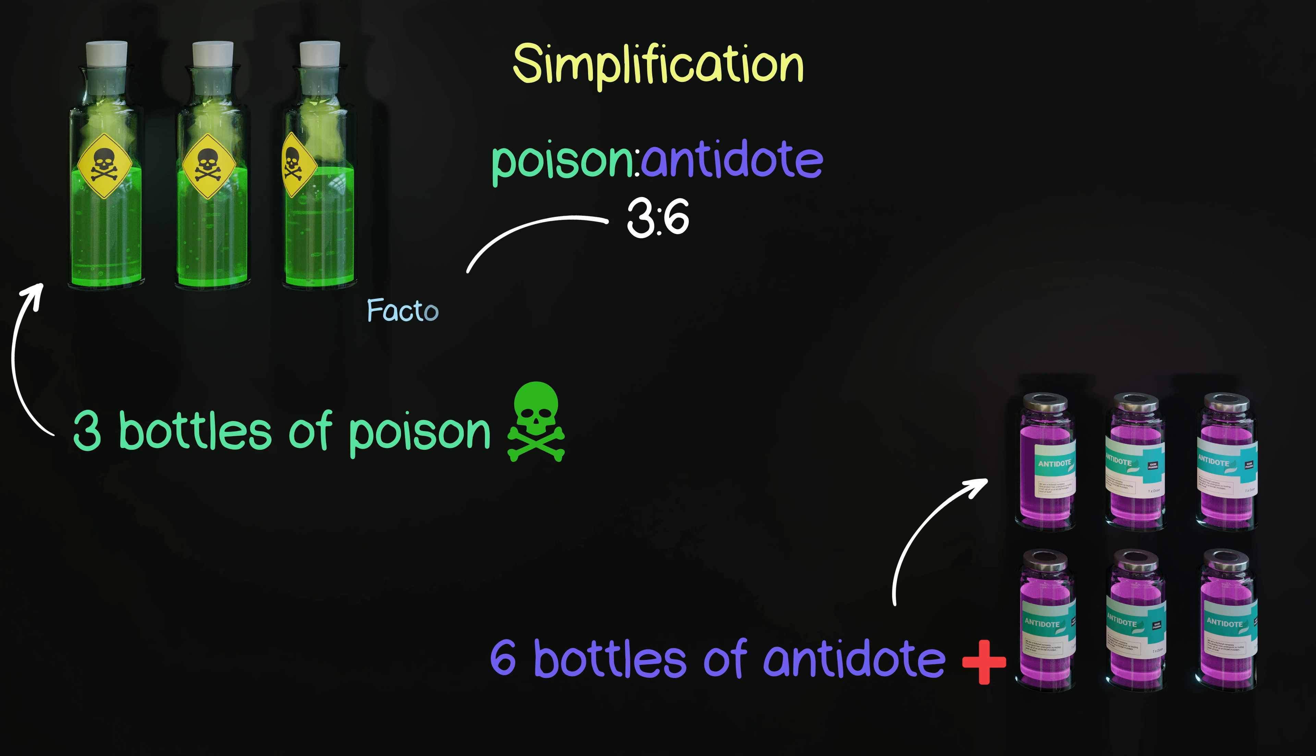The factors of three are one and three, and the factors of six are one, two, three, and six. So the highest number that goes into both is three, so that's our highest common factor. Now when we divide both sides of our ratio by three, it leaves our ratio in its simplest form.